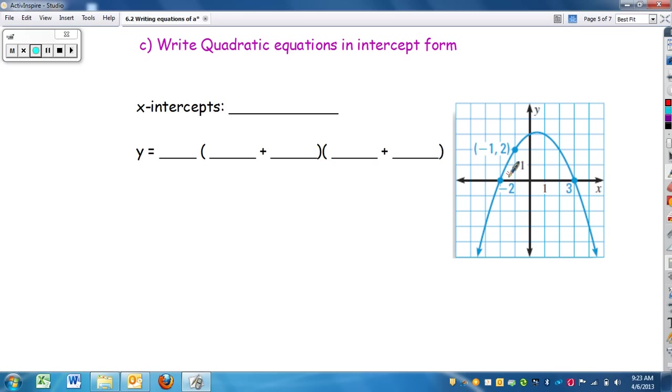So my x-intercepts here, looking, we have negative 2, and we have 3. So negative 2 and 3. So I have a. We have x. Negative 2 is the solution, so positive 2 goes into my equation. 3 is the solution, so then I have minus 3. So I need another point. Again, I give you a nice point for you to work with. So we have x and y. So we have 2 equals a, negative 1 plus 2, negative 1 minus 3.